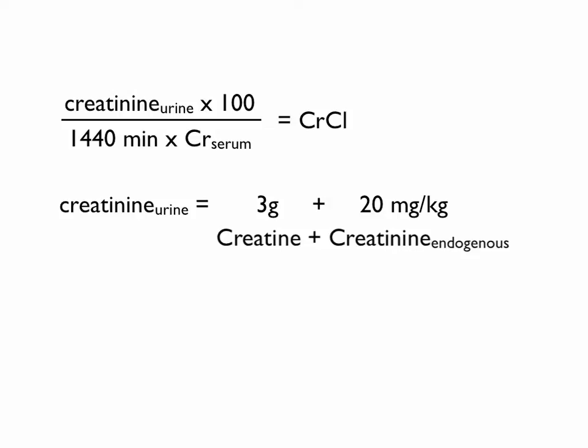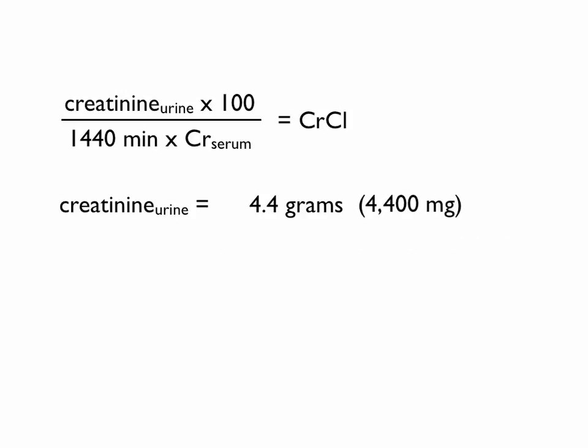Endogenous creatinine is 20 milligrams per kilogram in men, and so multiply that out. For a hypothetical 70-kilogram patient you'll never see, you get 1.4 grams. Add them together, you get 4.4 grams. Our units need to be in milligrams, so that's 4,400 milligrams.